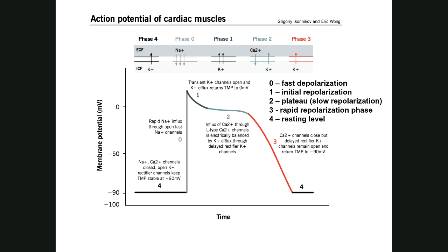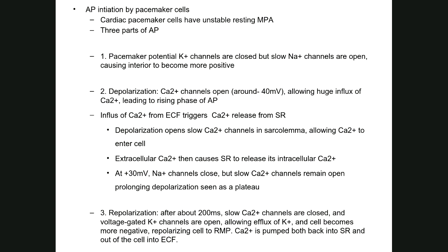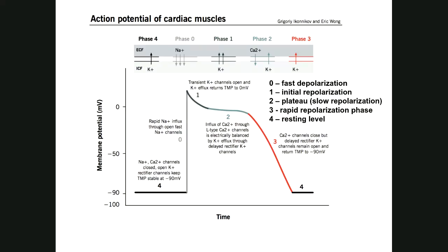After 200 milliseconds, rapid repolarization occurs, caused by the efflux of potassium, and the cell becomes more negative, repolarizing the membrane to return to the resting potential. During this period, the calcium channels are closed and potassium channels remain open until the resting membrane potential is reached.